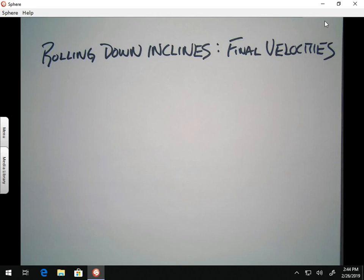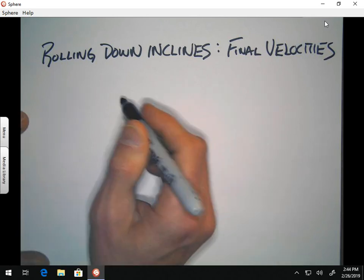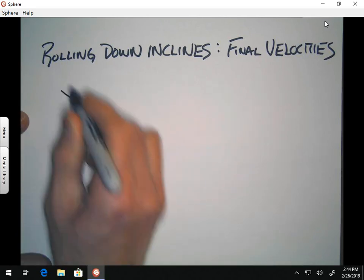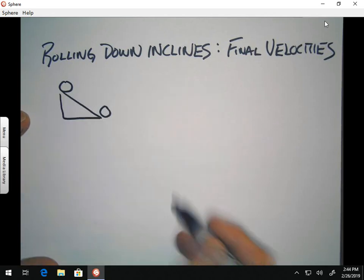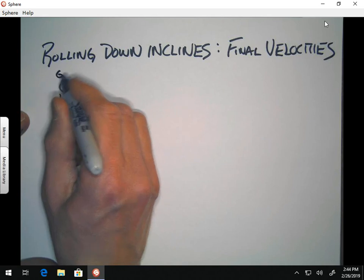In order to actually understand this, you're going to have to use the results that we got from the earlier lessons. So, again, the picture is an object on a ramp, and the object starts off with the GPE up here.